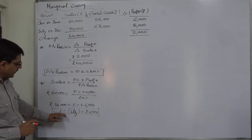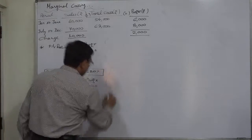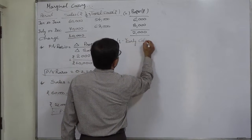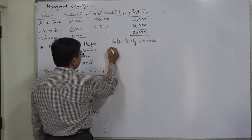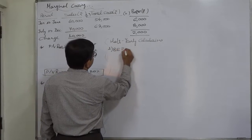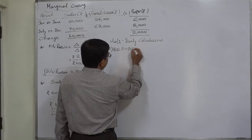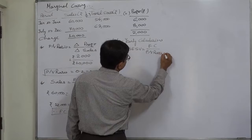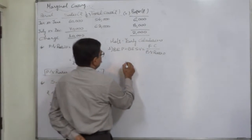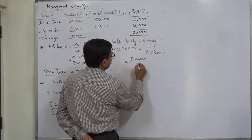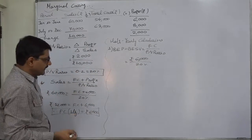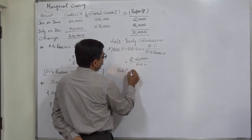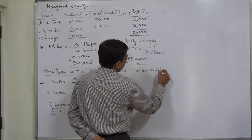Let us calculate the break-even point and margin of safety on the basis of this half-yearly fixed cost, so both will be half-yearly calculations. Break-even sales value equals fixed cost upon PV ratio — rupees 6,000 divided by 20% — and we know that 6,000 is 20% of rupees 30,000. So break-even sales value comes to rupees 30,000, which is half-yearly.